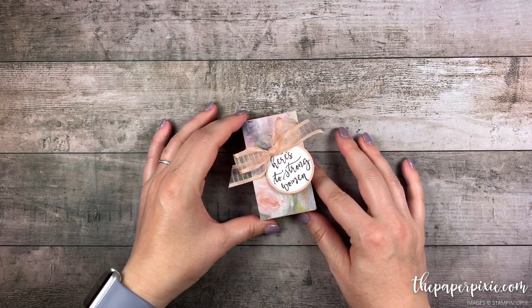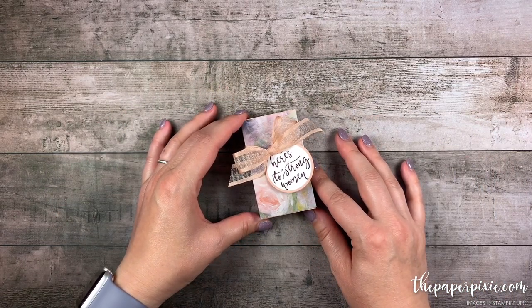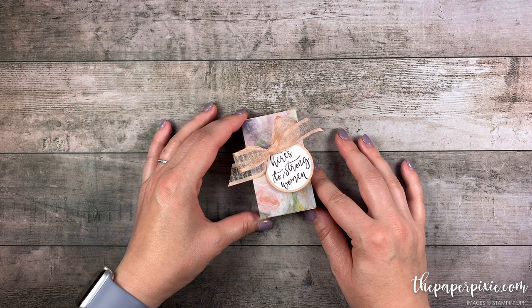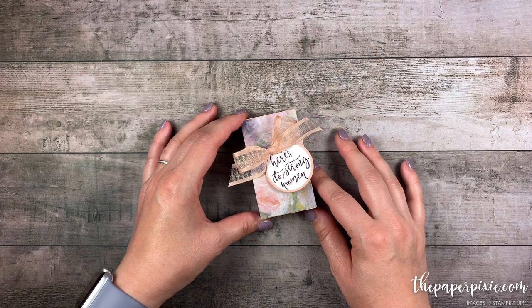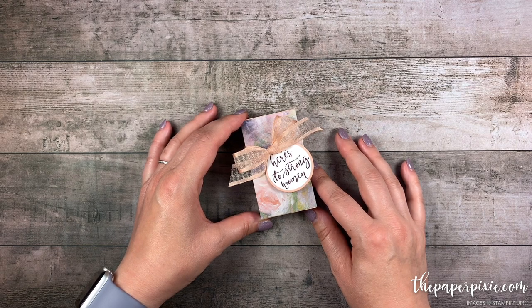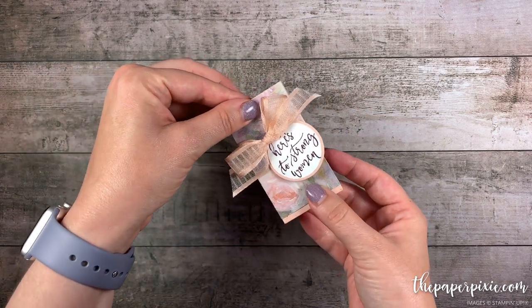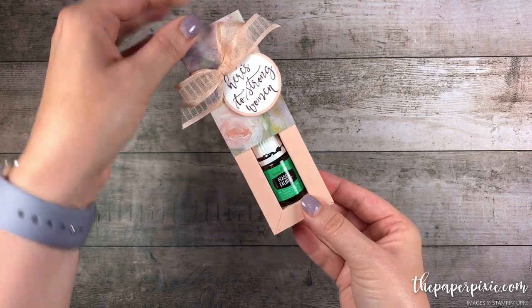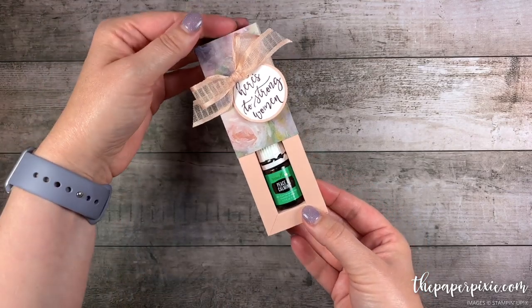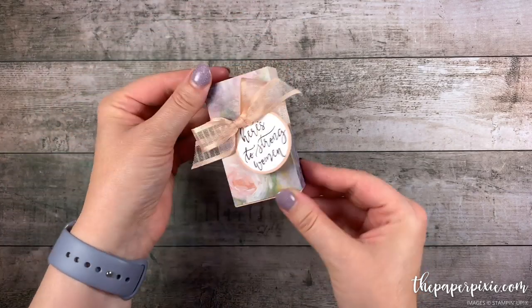Hi there. Thank you so much for joining me today. This is Julie DiMario from ThePaperPixie.com. I'm an independent Stampin' Up! demonstrator in the US. And in this video tutorial, I'm going to show you how to make this beautiful shadow box that is sized to fit one of the 5ml bottles of essential oil.